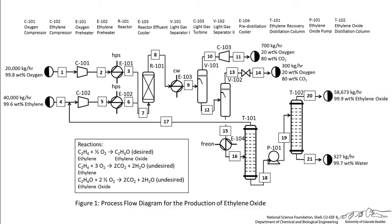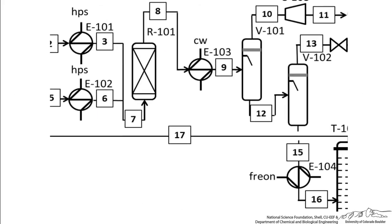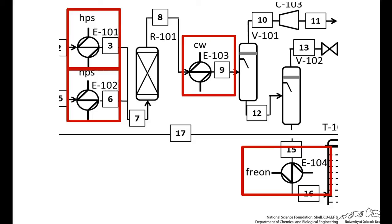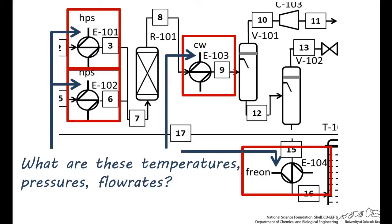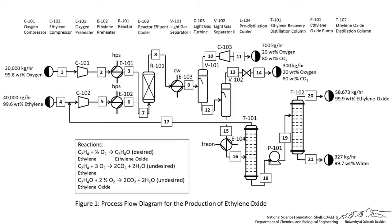You may have noticed that on this process flow diagram, there are four heat exchangers using utility streams. Two of these use high-pressure steam, one uses cooling water, and another uses freon refrigerant. But what are the temperatures, pressures, and flow rates of these streams coming in and going out of these heat exchangers? On this diagram, there are no stream numbers for these utility streams, so there would be no place to provide this information. Because this diagram is meant as a very simplified representation of this process, I did not specify or number the utility streams.